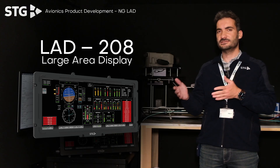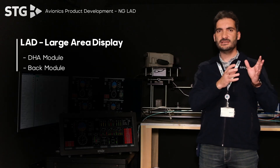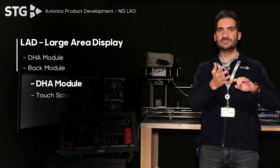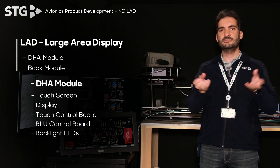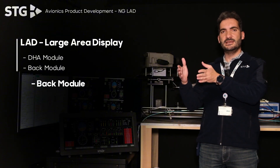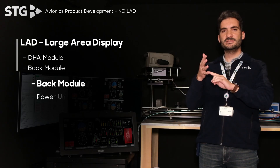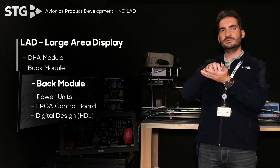Moving on to more details at the equipment level of the Large Area Display — we call it LAD for short. LAD has two main parts: the DHA module and the back module. The DHA module consists of a touch screen, display, touch control board, backlight control board, and edge-lit backlight units. On the other side, the back portion of the LAD has power units, FPGA control boards, and all the digital design on it.